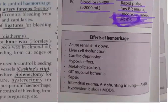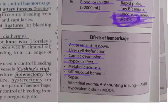The effects of hemorrhagic shock on organ systems include: acute renal shutdown, liver cell dysfunction, cardiac depression, metabolic acidosis, GI mucosal ischemia and sepsis, AV shunting in the lungs leading to acute respiratory distress syndrome, and ultimately multiple organ dysfunction.